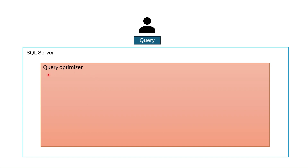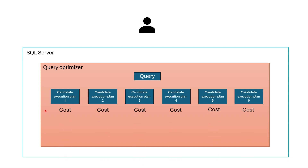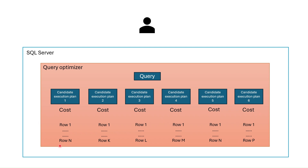When a user runs a query for the first time, it is submitted to the query optimizer to generate a query execution plan. Based on this query, the query optimizer will generate candidate plans and estimate the cost of these plans. The estimated cost is based on algorithms and operators used, as well as the number of rows to be processed — we call this estimated number of rows the estimated cardinality.